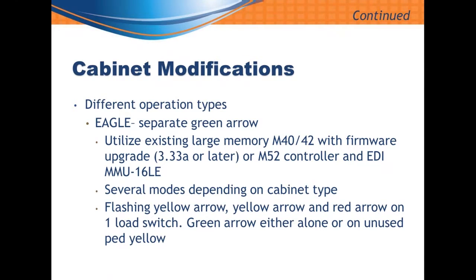That was a cost savings — we didn't always have to buy a new controller. But looking back five or six years into the project, I would recommend replacing the controller. The M42 is a good controller but requires replacing EPROMs for upgrades and has no capacity to transfer the controller program through a data key or flash drive. Since the programming is rather complicated, it's good to have an easy way to transfer it. Also, since we originally did this, the MMU-2 standard that NEMA developed took everybody's different flashing yellow arrow modes and assigned a letter type for each one, meaning you could now use an EDI MMU or a Reno MMU in most flashing yellow arrow designs.